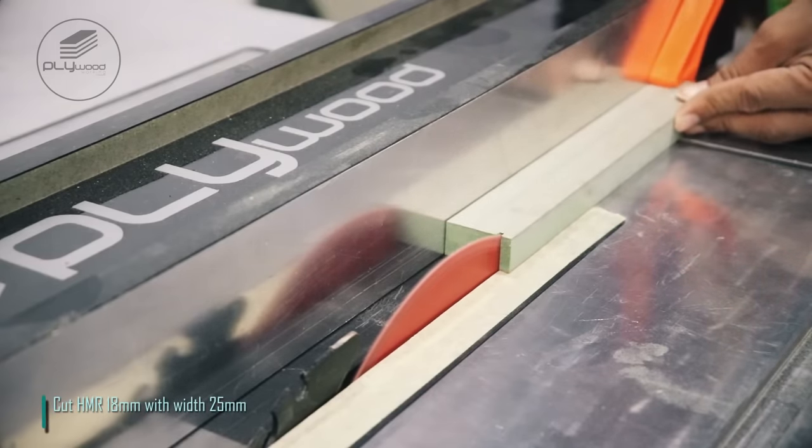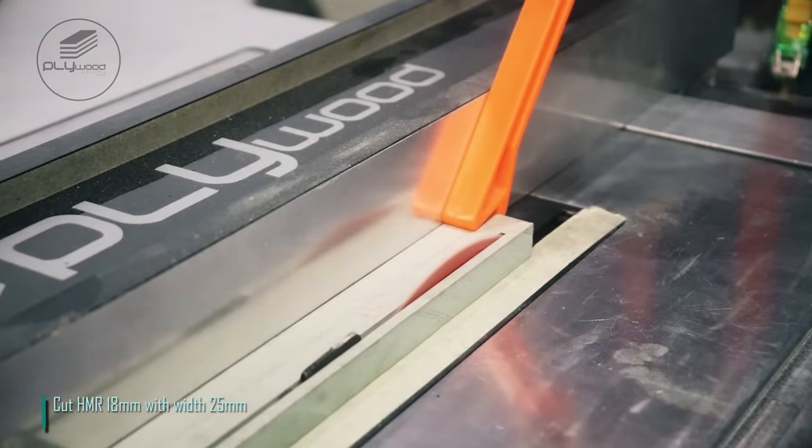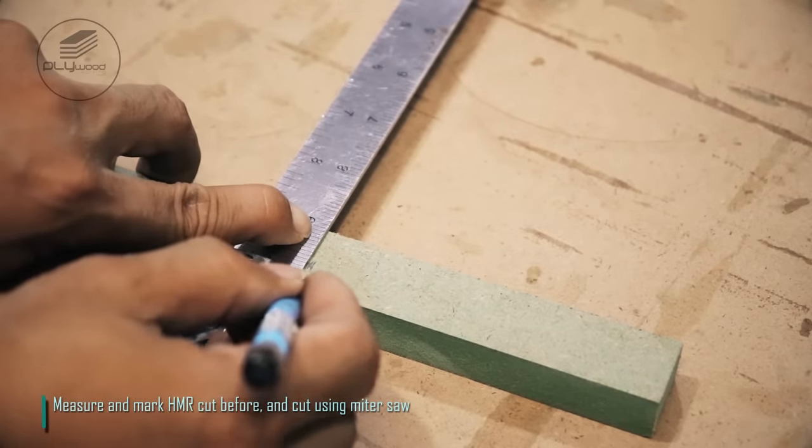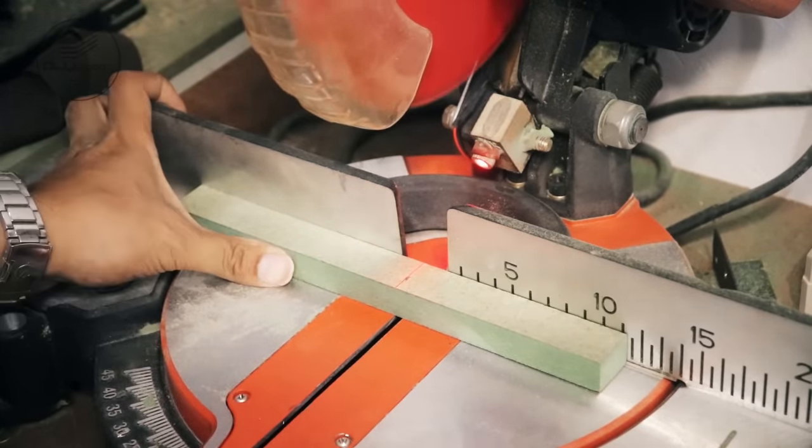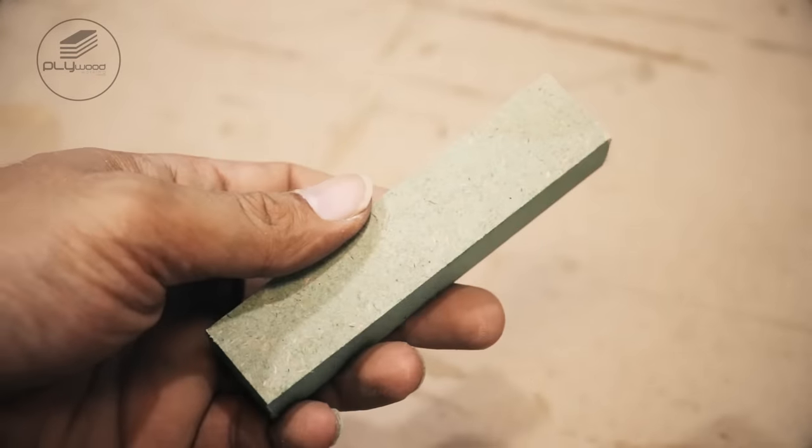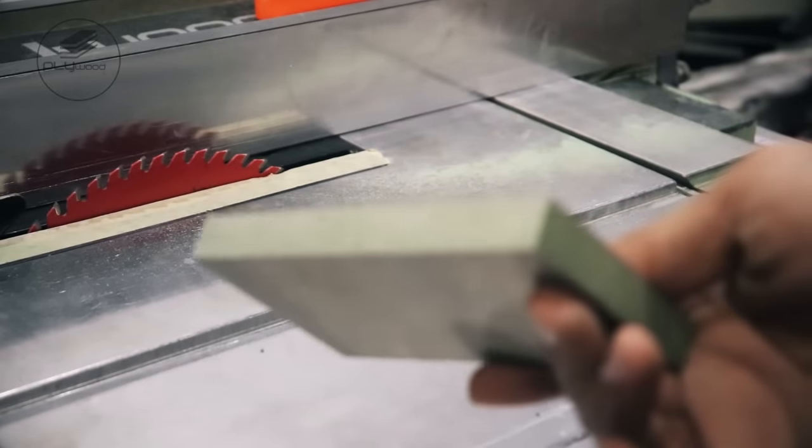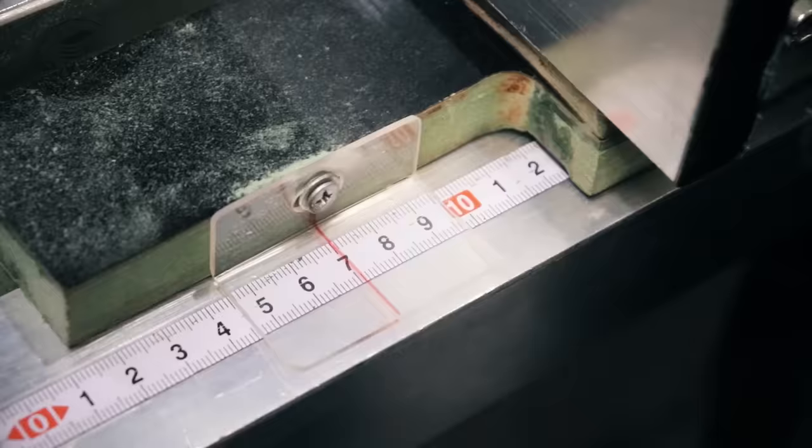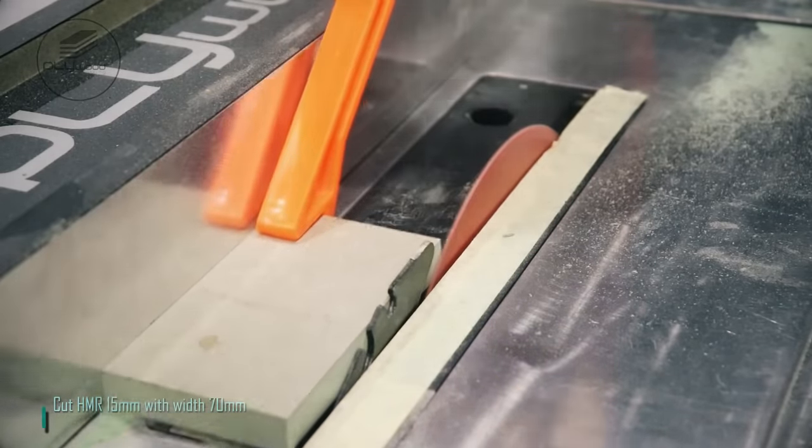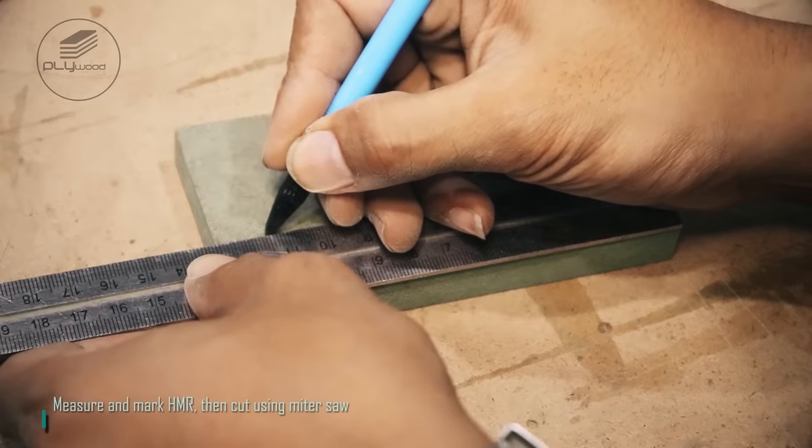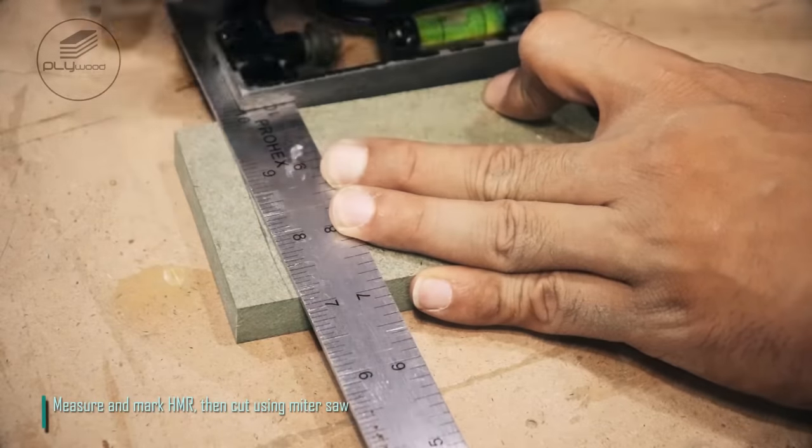Cut HMR 18 millimeters with width 25 millimeters. Measure and mark HMR cut before and cut using mitre saw. Cut HMR 15 millimeters with width 70 millimeters. Measure and mark HMR 15 millimeters, then cut using mitre saw.